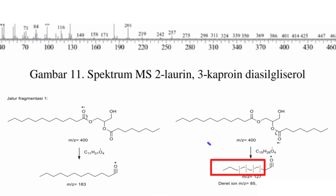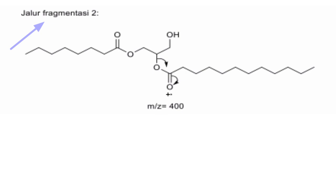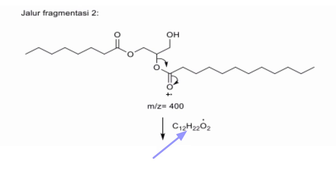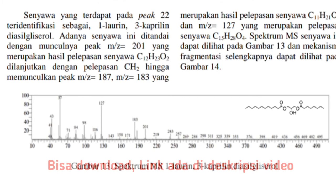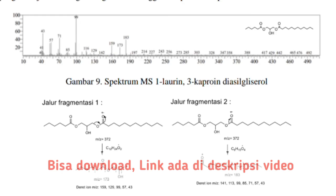Ini adalah jalur fragmentasi keduanya, di mana terjadi pembelahan heterolisis — lalu ikatan rangkap 2 di oksigen ini diberikan 2 elektron ke oksigen ini — sehingga C₁₂H₂₀O₂ menjadi radikal, dan terbaca di spektrum masa adalah 201 m/z. Jadi karena asam lemak dan bentuk ester ini sama saja, teman-teman pola fragmentasinya hampir sama. Teman-teman bisa download link referensi materinya untuk melihat contoh fragmentasi dari metil ester yang lain. Linknya saya cantumkan di deskripsi video, teman-teman bisa download untuk mempelajari pola fragmentasi berikutnya.